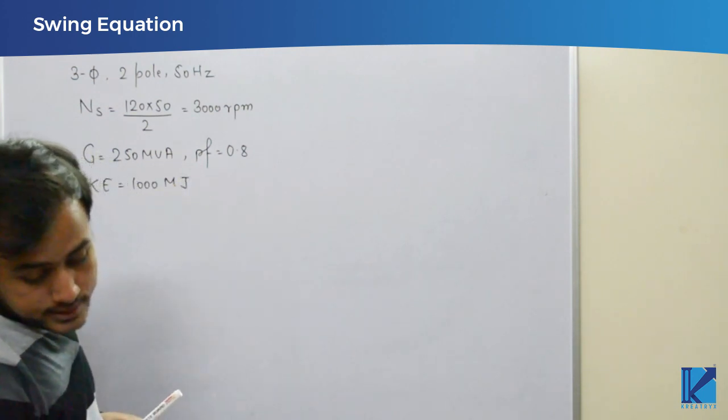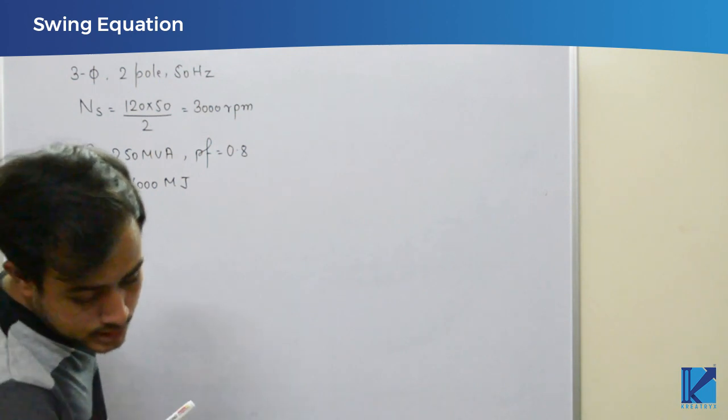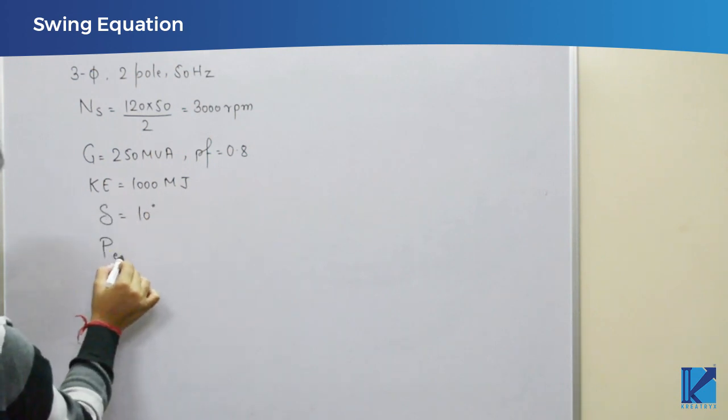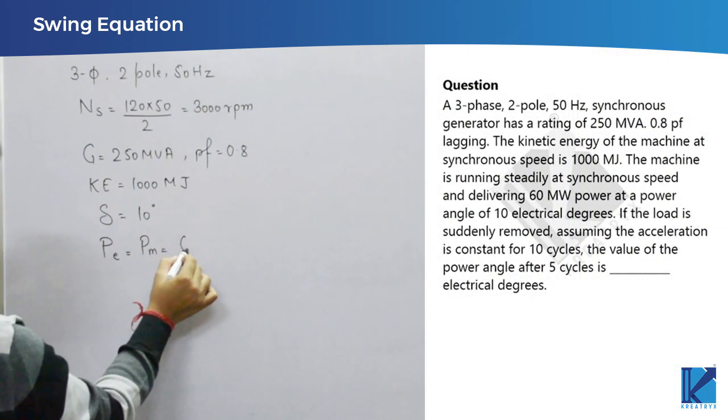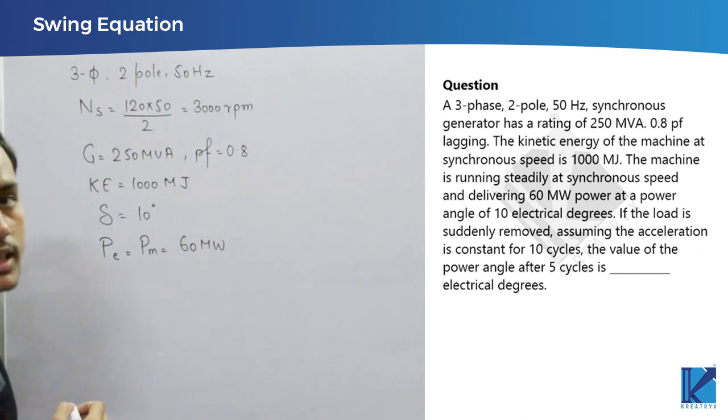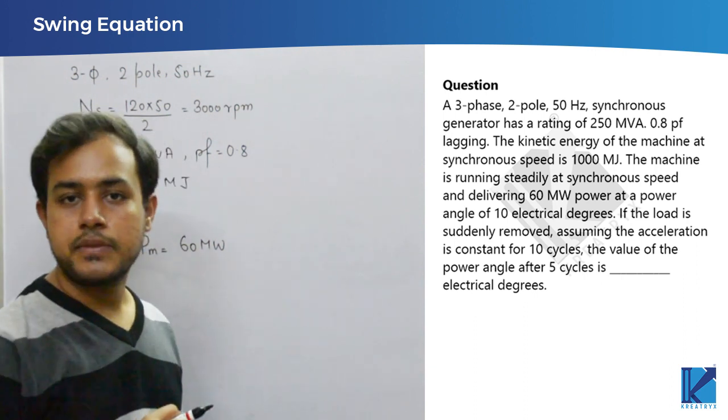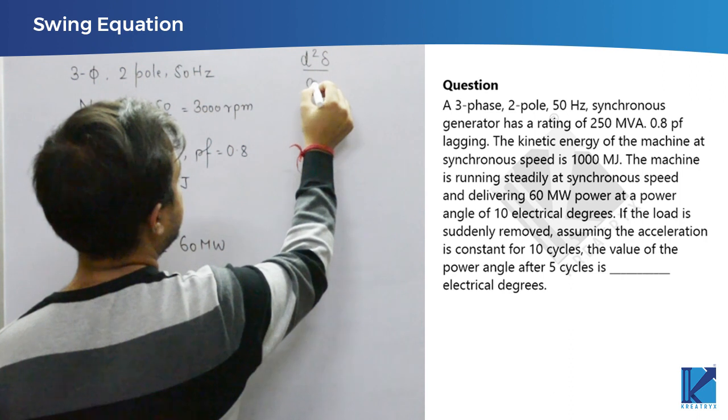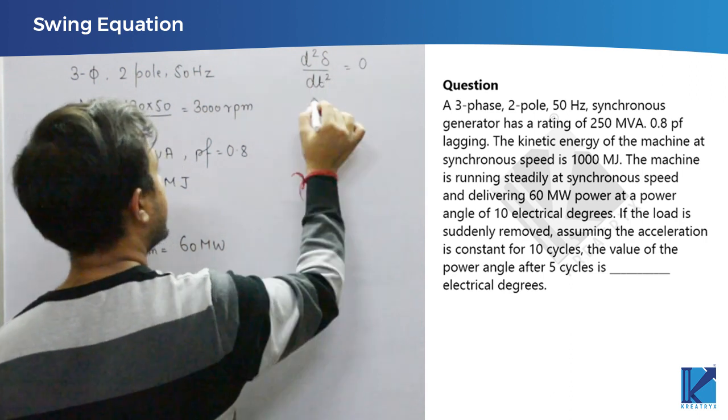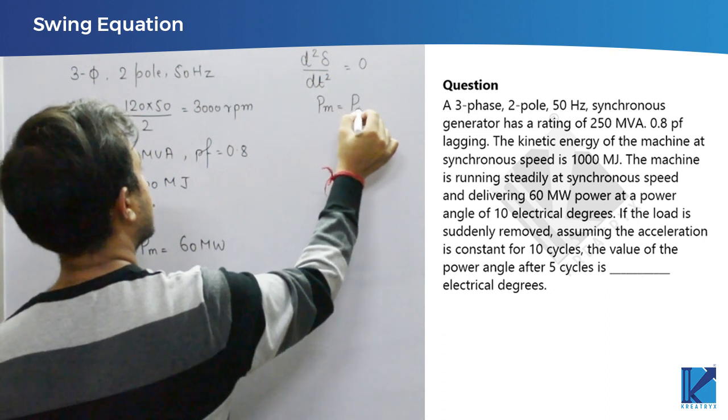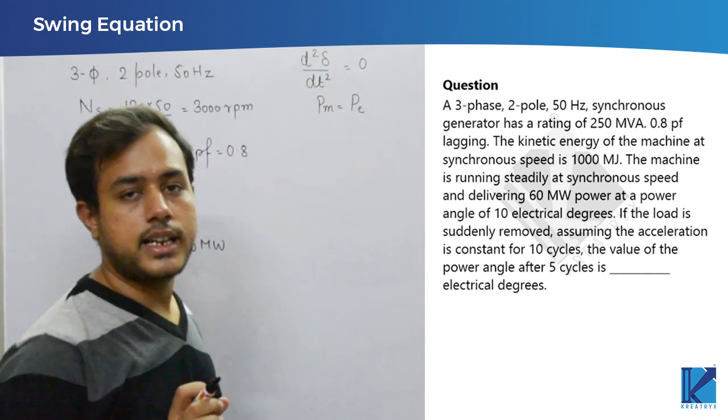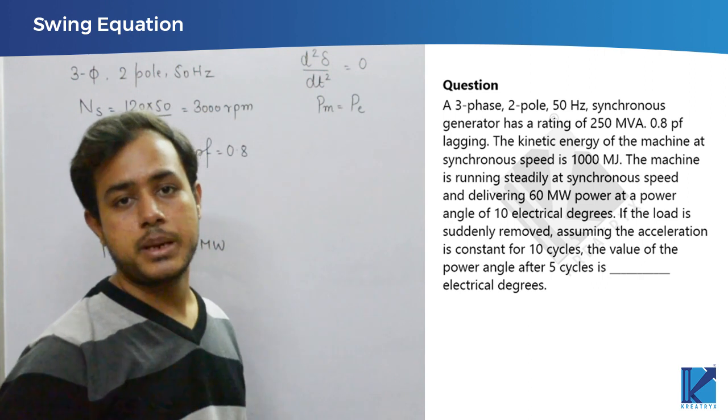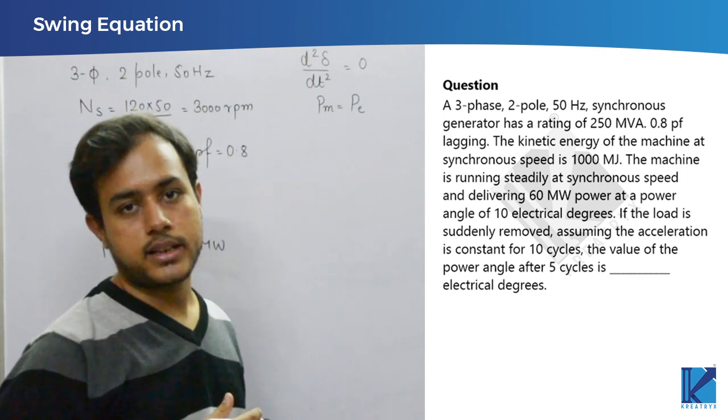The machine is running steadily at synchronous speed and delivering 60 megawatt power at 10 electrical degrees. So, delta is initially 10 degree and power delivered by machine is 60 megawatt. Why I am writing P equal to Pm? Under steady state, machine will be rotating at constant speed. So, its acceleration, which is initially d square delta by dt square must be 0. If it is 0, it means Pm equal to Pe.